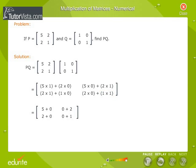Thus, we get PQ is equal to matrix 5, 2, 2, 1, which is of the order 2 by 2.